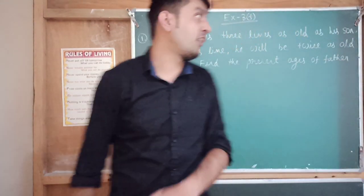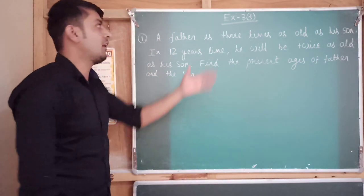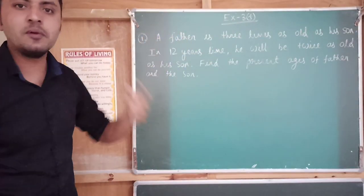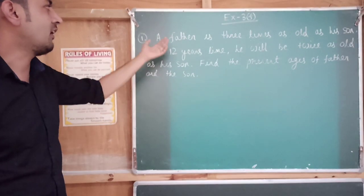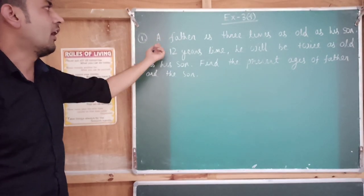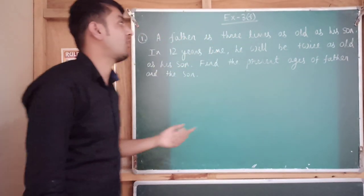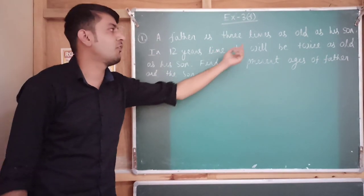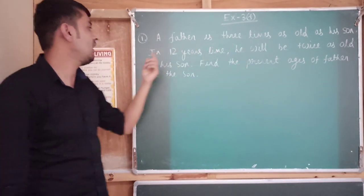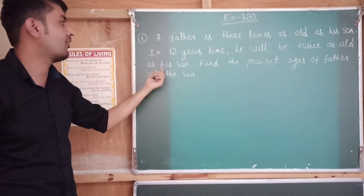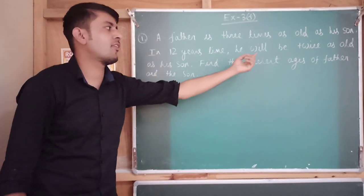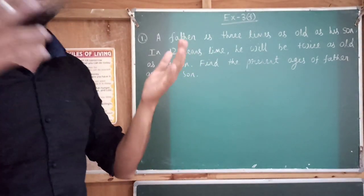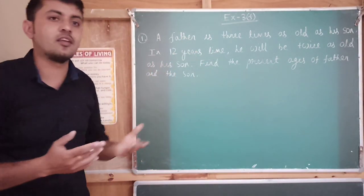Hello students. In this video we will be learning how to solve exercise 3F, question number 1. In this question they have said: a father is three times as old as his son. In 12 years time, he will be twice as old as his son. Find the present age of the father and the son.